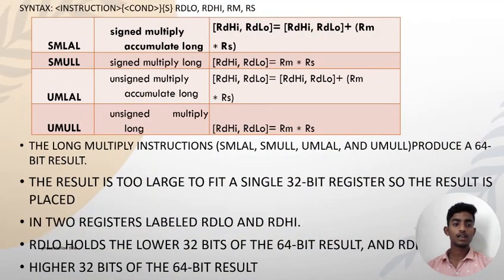The long multiply instructions SMLAL, SMULL, UMLAL, and UMULL produce a 64-bit result. The result is too large to fit in a single 32-bit register, so the result is placed in two registers labeled RDLO and RDHI. RDLO holds the lower 32 bits of the 64-bit result and RDHI holds the higher 32 bits.